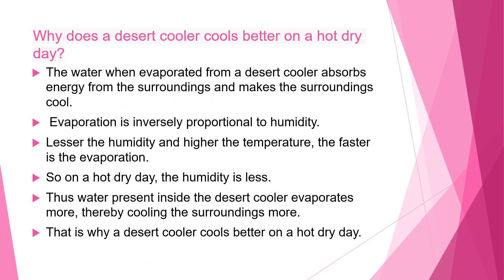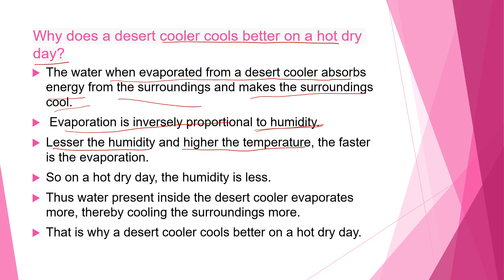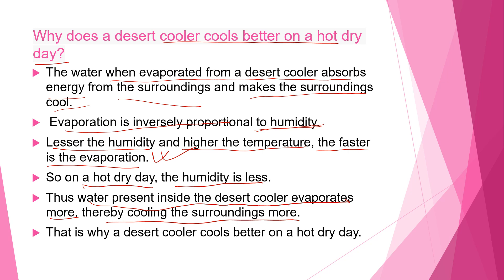The second question: why does a desert cooler cool better on a hot dry day? When water evaporates from a desert cooler, it absorbs energy from the surroundings, making them cool. Evaporation is inversely proportional to humidity — the lesser the humidity and higher the temperature, the faster the evaporation. Humidity means the content of water vapor in air. On a hot dry day, humidity is less, so water inside the desert cooler evaporates more, thereby cooling the surroundings more.